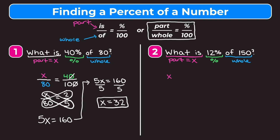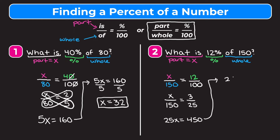Plugging in: X over 150 equals 12 over 100. I can't simplify the left side because of the variable, so it stays as X over 150. For 12 over 100, dividing top and bottom by 4 gives 3 over 25. Cross multiplying: 25X equals 3 times 150, which is 450. Dividing both sides by 25 gives X equals 18.